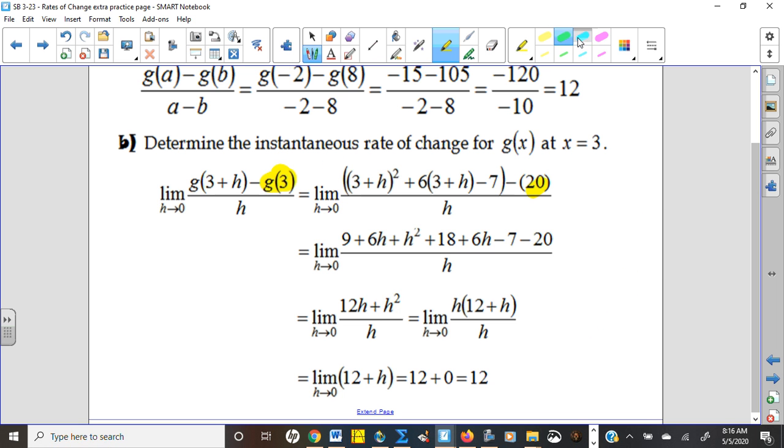This entire piece right here is plugging 3 plus H into our original functions, and you can see that it very slowly expands as we distribute, and then everything that does not have an H should go away, and sure enough, the 27 we would get from the 9 and the 18 go away with this negative 27 we get, and all you have left are things with H's, so it should work that way every single time.